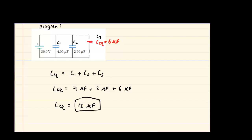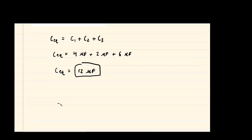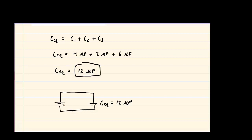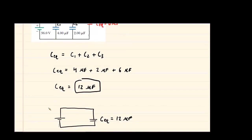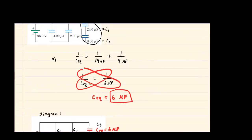We want to redraw this as a single loop with a single battery and a single capacitor. The C_EQ for part B is 12 microfarads. We complete the circuit, and the battery had a voltage, or EMF as they sometimes call it, of 36 volts. So we label that accordingly — 36 volts. That's the diagram for part B.